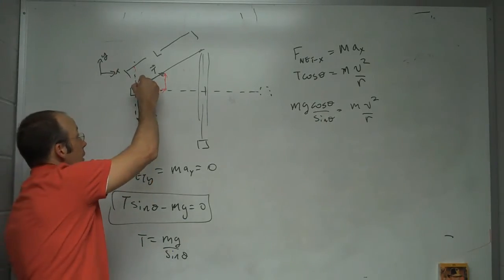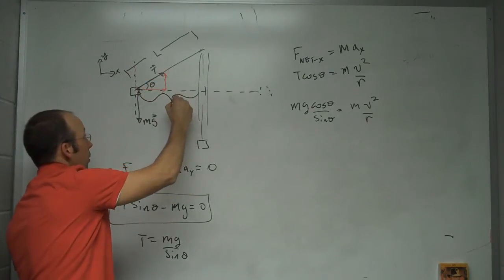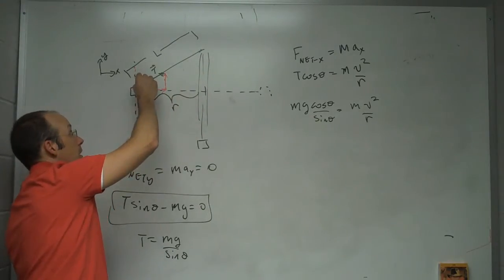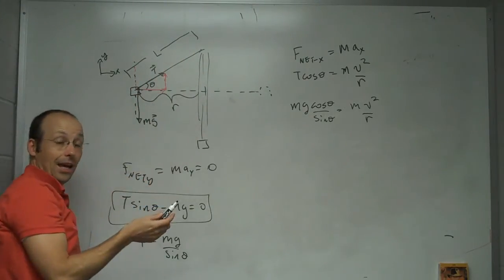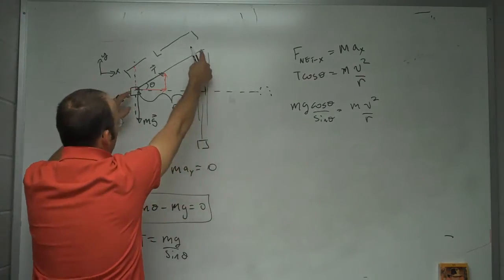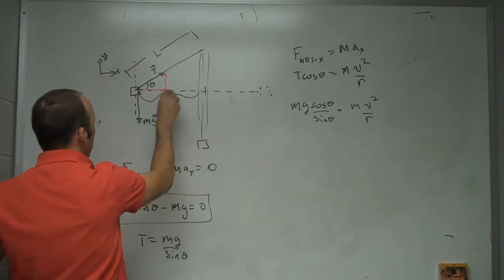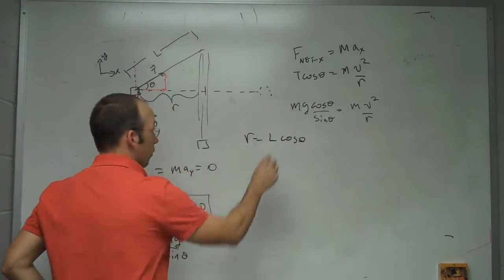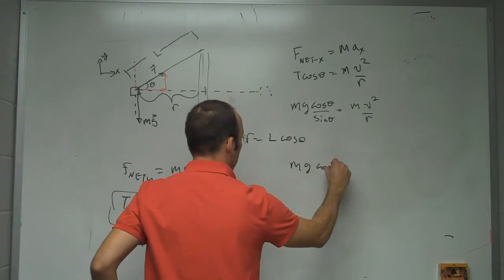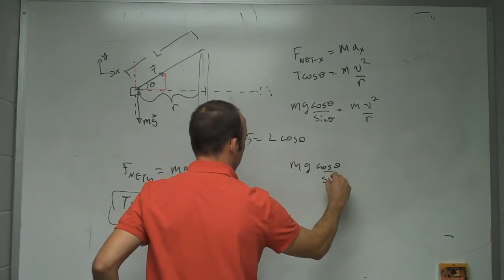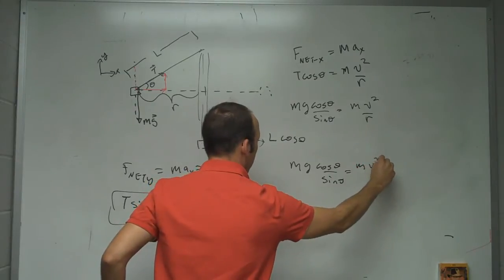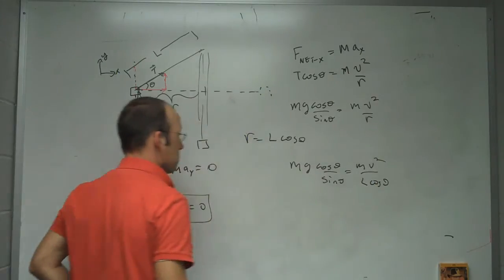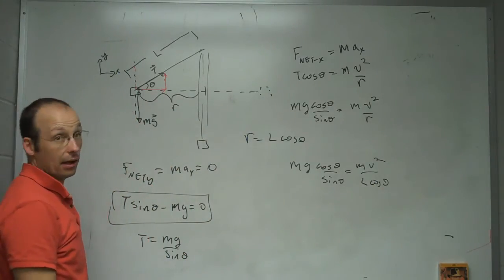But, r I can determine because look here, this is r. And, this is a right triangle. So, if that is a length l, which I can measure, you can make sure you have your string length constant. Then, r is going to be l cosine theta. So, this becomes mg cosine theta over sine theta equals m v squared over l cosine theta. I actually shouldn't have done that right away. But, it's okay.